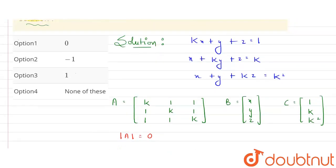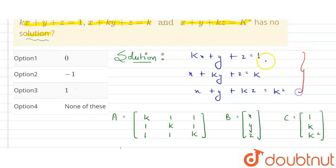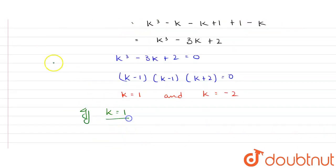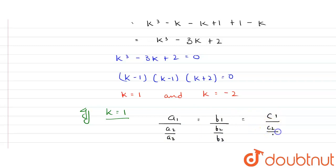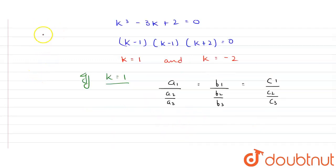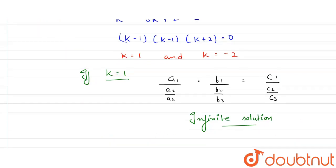We have two values of k. Putting k = 1, all three equations become x + y + z = 1, making them identical. This gives the condition a₁/a₂ = b₁/b₂ = c₁/c₂, which is the condition for infinite solutions. So k = 1 gives infinite solutions, not no solution.